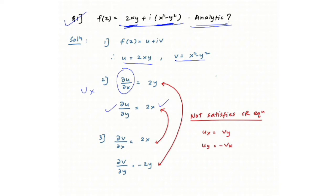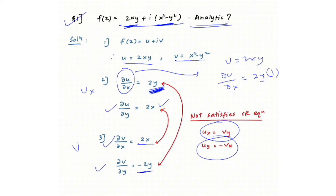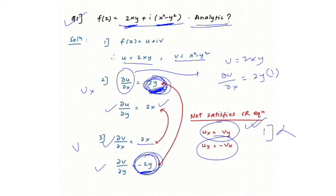Next, for v = x² − y², find vₓ = 2x and v_y = −2y. Now check the Cauchy-Riemann conditions: is uₓ = v_y? That is, is 2y = −2y? No, it is not equal. Step 1 failed, so the function is not analytic.